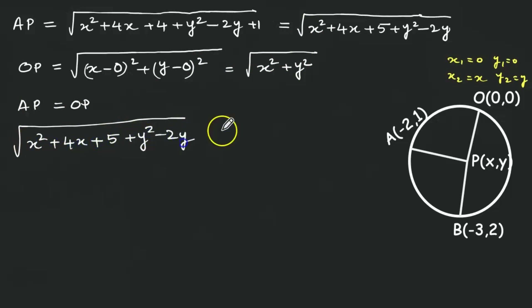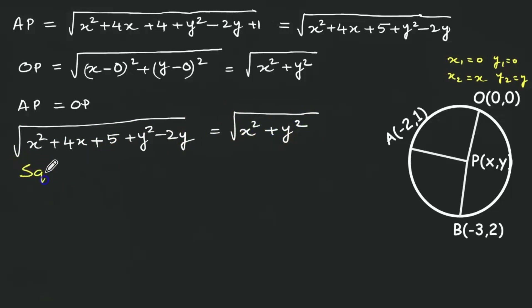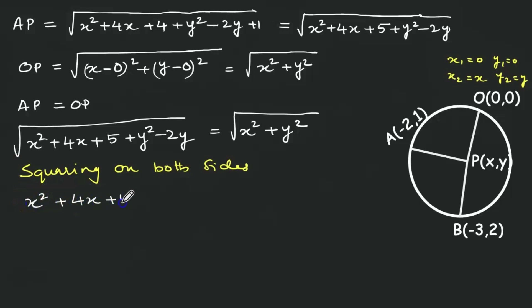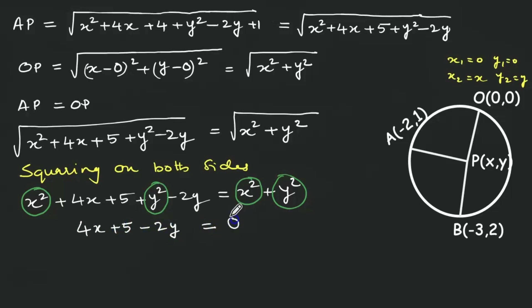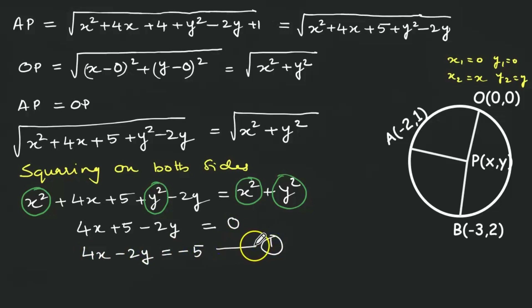Squaring both sides to cancel the roots, we get x squared plus 4x plus 5 plus y squared minus 2y equals x squared plus y squared. Cancelling x squared and y squared from both sides, we get 4x plus 5 minus 2y equals 0. Rearranging: 4x minus 2y equals minus 5. This is equation number 1.